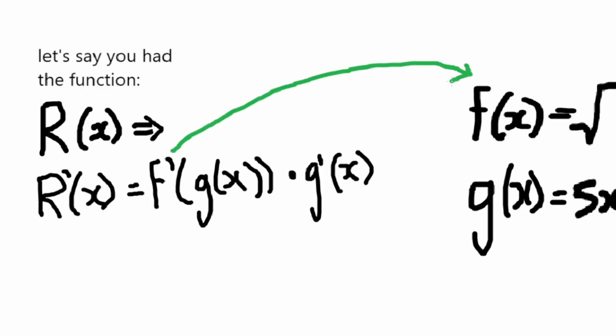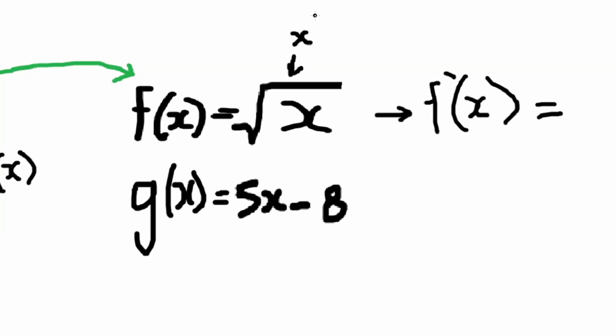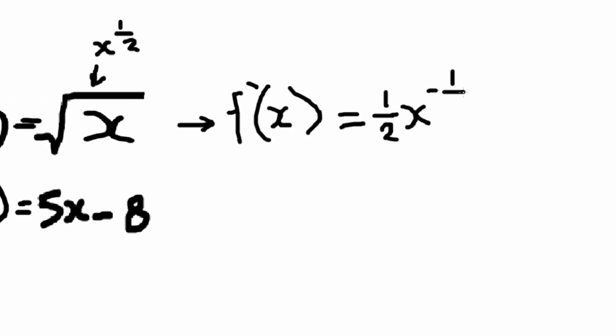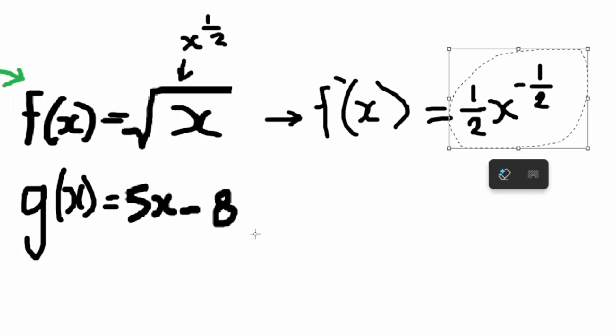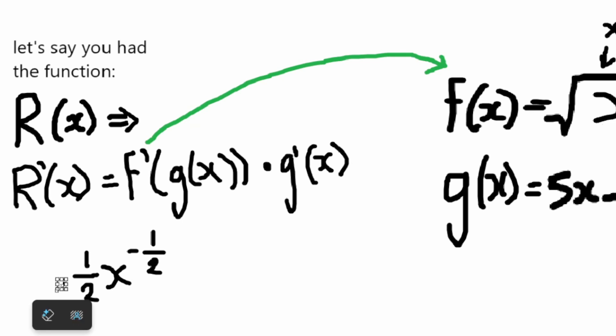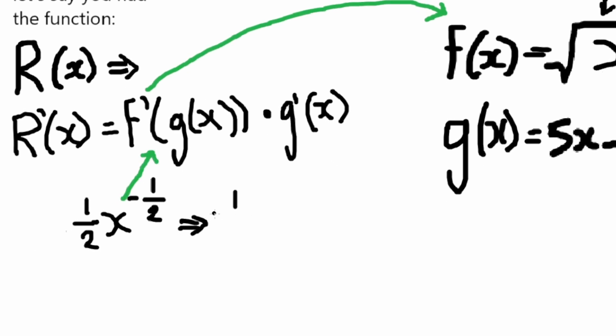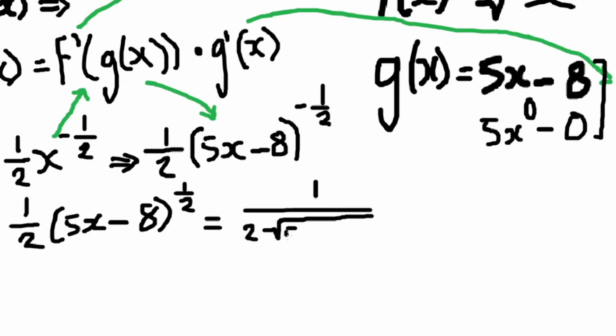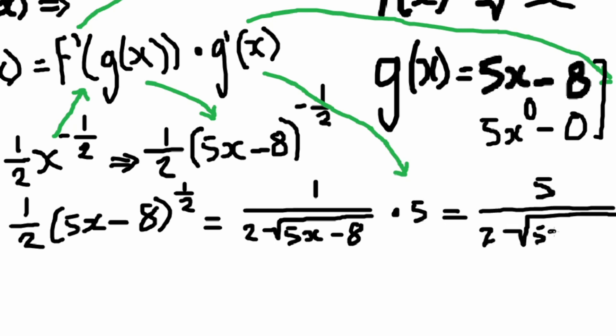So we take the f prime of x, which would be the x to the power of 1 half part, and then we subtract 1 and multiply it by 1 half to get 1 half times x to the power of negative 1 half. And then because r prime we are substituting in our function g, which is the 5x minus 8, we end up getting 1 divided by 2 times the square root of 5x minus 8. And finally multiply it by 5, because we are multiplying by the derivative of g, the derivative of 5x minus 8. So in the end, we have the exact same solution as the one we get for the first principles.